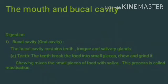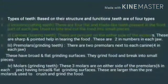The buccal cavity, that is the oral cavity, contains teeth, tongue, and salivary glands. The teeth break the food into small pieces. We chew and grind the food, and chewing mixes small pieces of food with saliva. This process is called mastication.